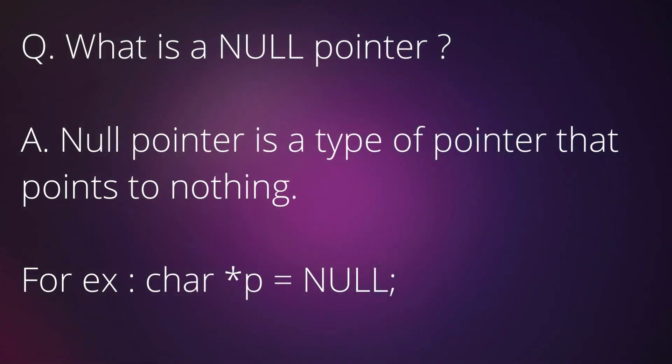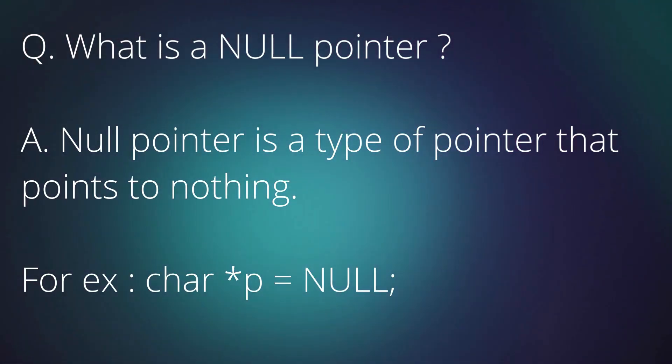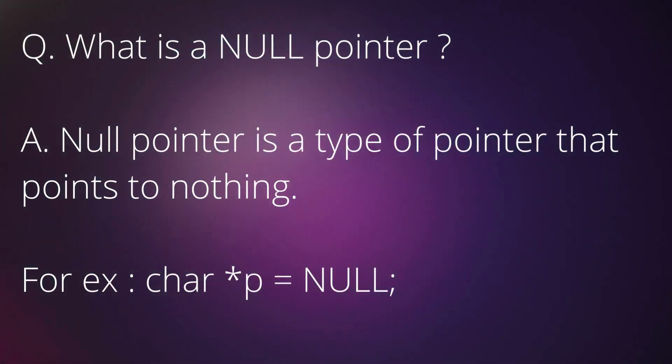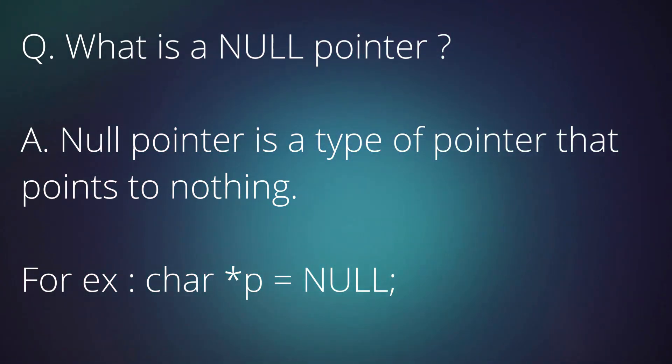Question: What is a null pointer? Answer: Null pointer is a type of pointer that points to nothing. For example: char *p equals NULL.